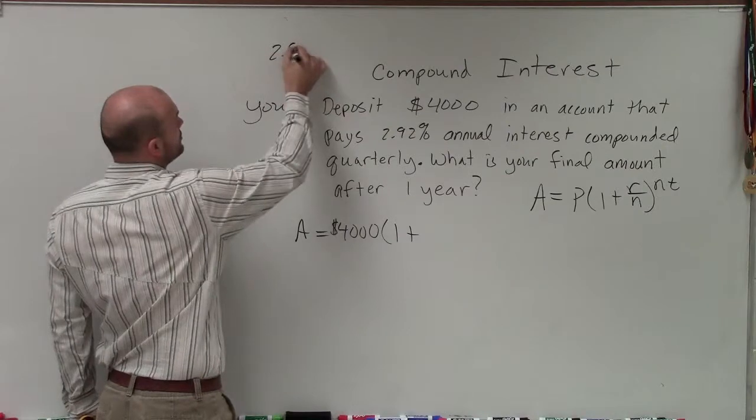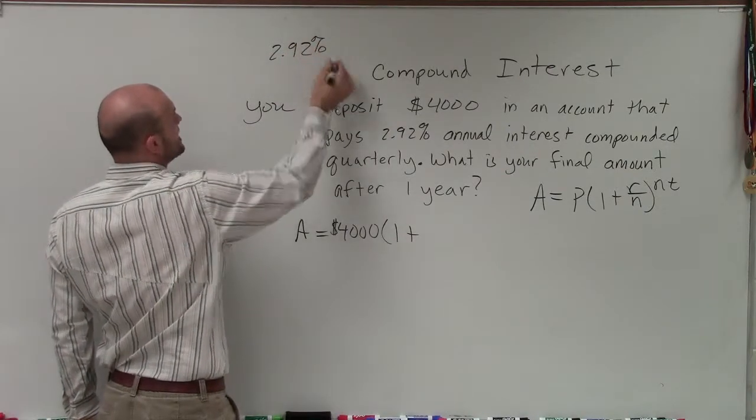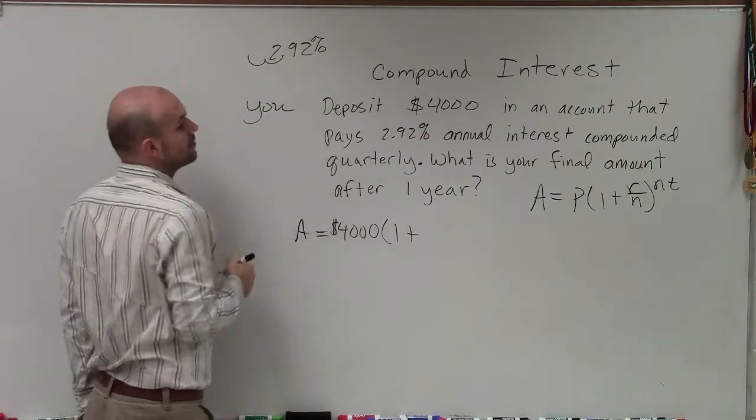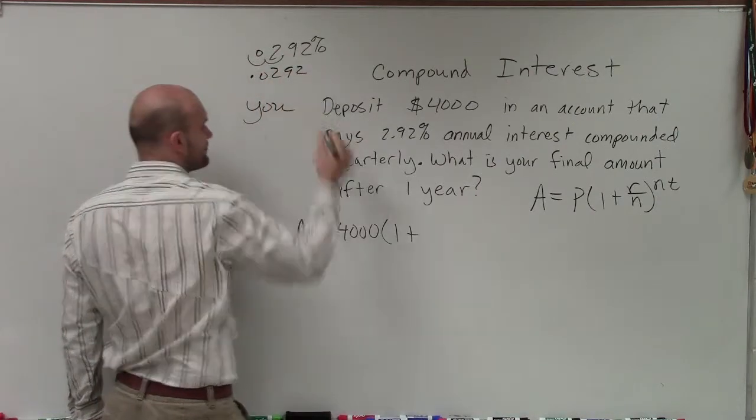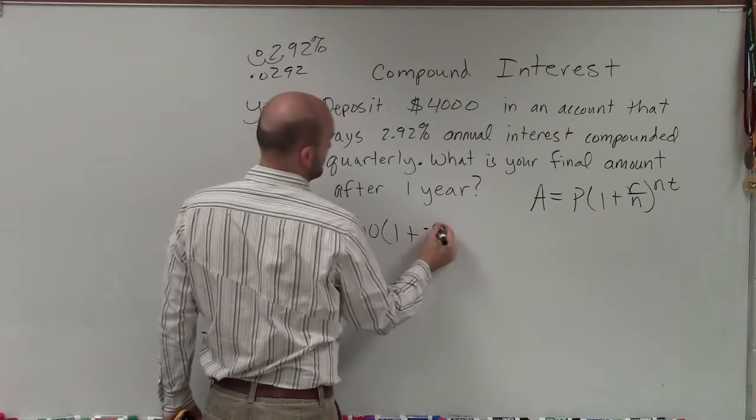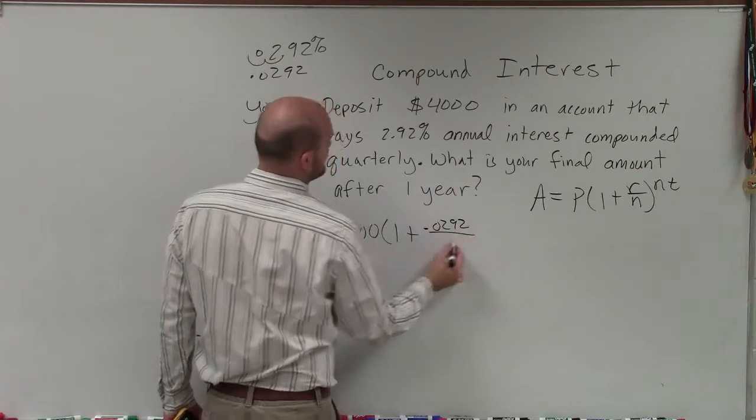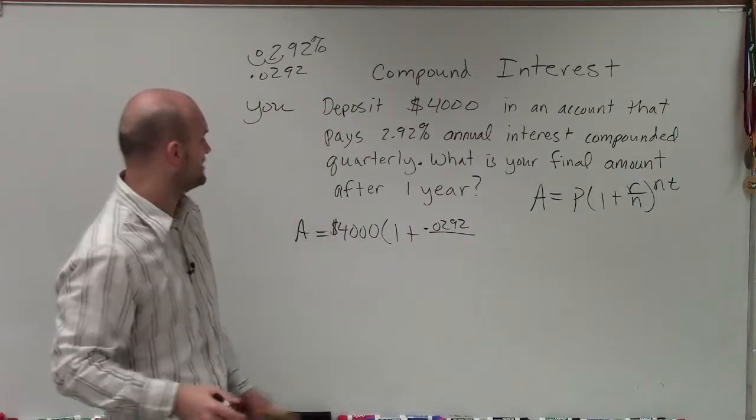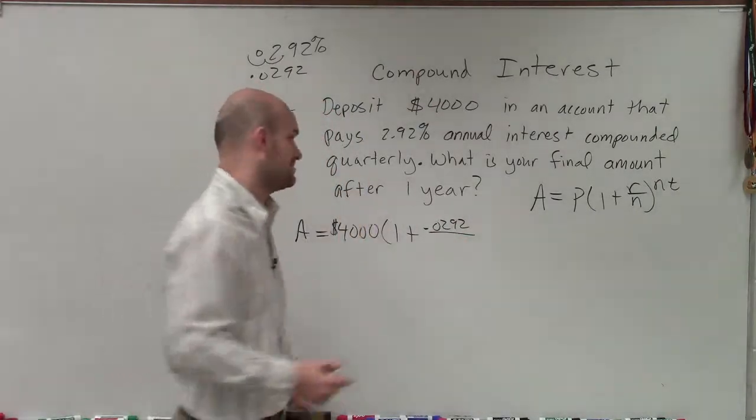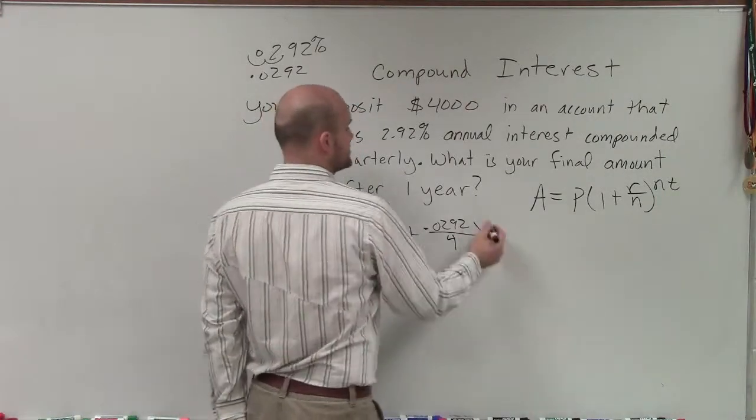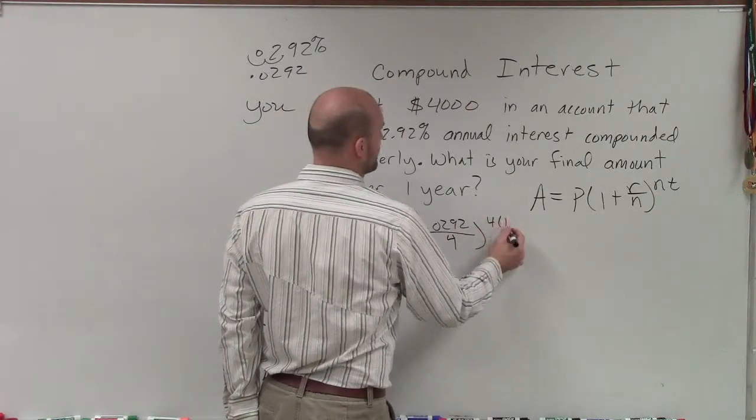We have 2.92%, which in decimal form is 0.0292. We divide by the number of times we compound per year. Since we're compounding quarterly, that's four times, raised to four times after one year.